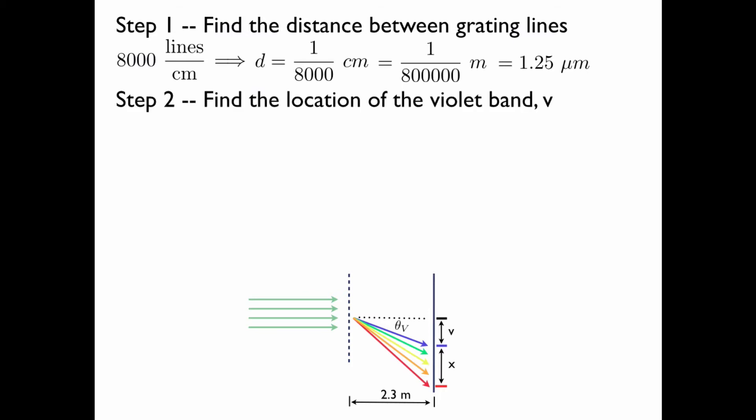Next, we'll find the location of the violet band, V. After we do this, we'll find the location of the red band, which is V plus X, and then we'll subtract the two to find the width of the band, X.